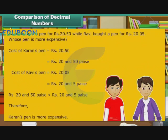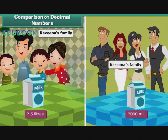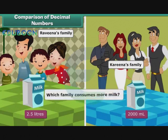Let us look at one more problem. Ravina's family consumes 2.5 litres of milk every day. Her friend Karan's family consumes 2000 ml of milk every day. Which family consumes more milk?